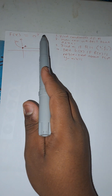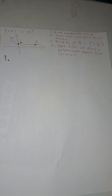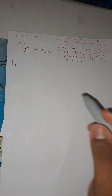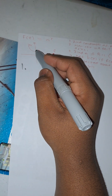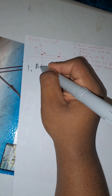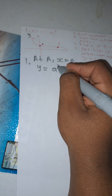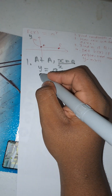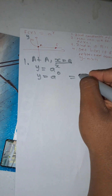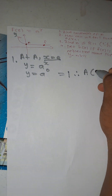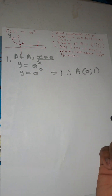Let's check an example. Given f(x) = a^x, the graph shown is a decreasing function. The first question asks: determine the coordinates of point A. Since A is the y-intercept, x equals zero. Substituting: y = a^0 = 1. Therefore the coordinates of A are (0, 1).